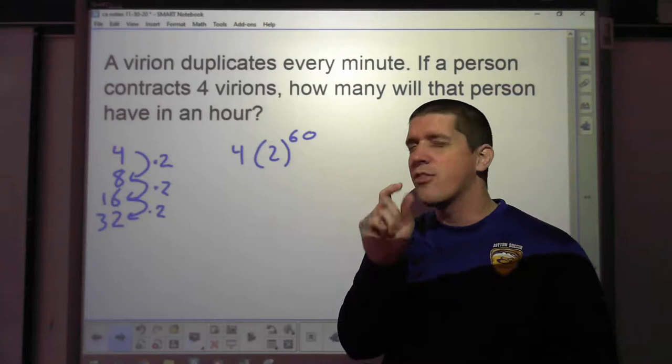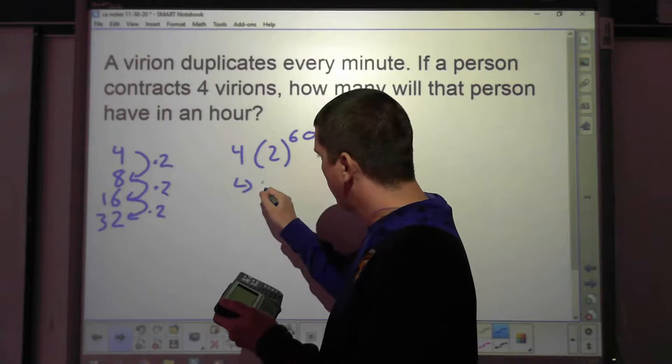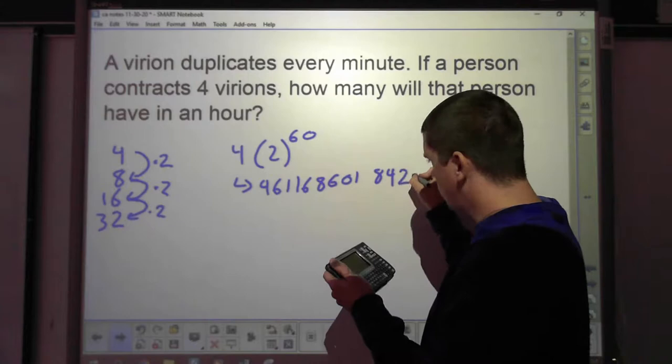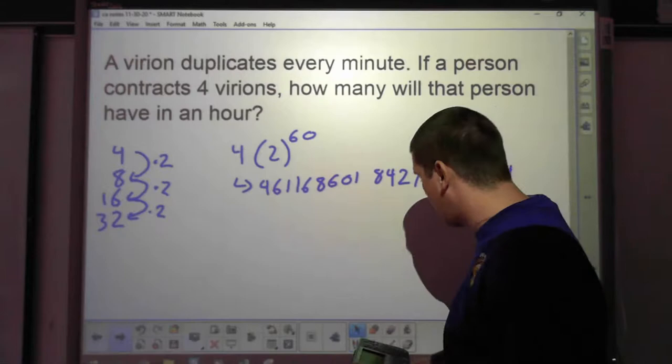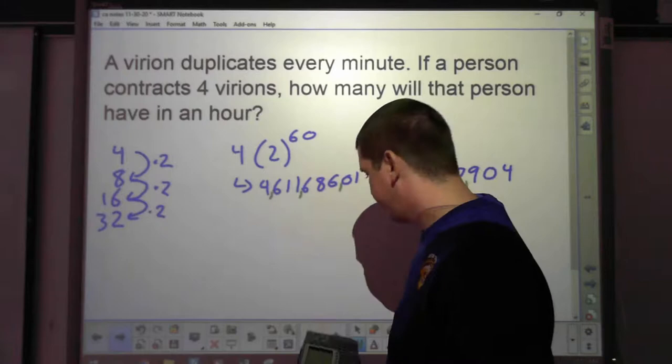So starting with four, got my calculator. Four times two to the 60th power. Thought I might beat the bell. I really thought I might. It's not too big guys. But we end up with 4,611,686,018,427,387,904. Let me throw some commas on here. Million, billion, trillion, quadrillion. It's just four quintillion virions. I mean, okay, whatever.